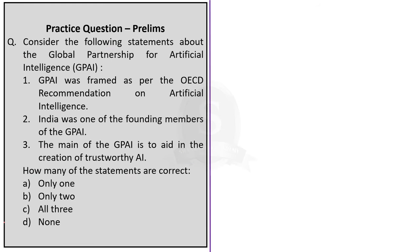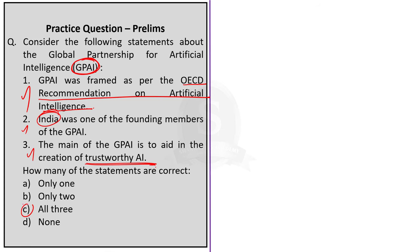Question 2: Consider the following statements about the Global Partnership for Artificial Intelligence. Statement 1: it was framed as per the OECD recommendation on artificial intelligence — this is correct. Statement 2: India was one of the founding members of GPAI — yes, this is also correct. Statement 3: the main aim of GPAI is to aid in the creation of a trustworthy AI — this is also correct. So all the given statements are correct, and the correct option is C.